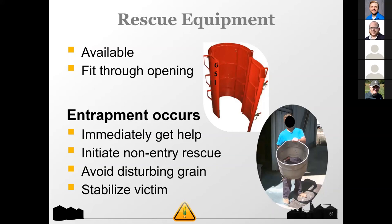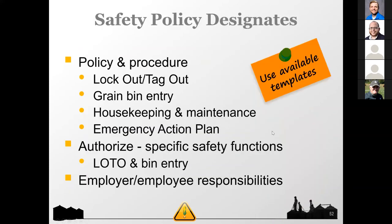The point of the rescue tube is to put it around the victim and then remove the grain mass around them to safely extricate the victim. It will only work in entrapment situations. Many fire and rescue departments these days have been purchasing them. By removing the grain, you stabilize the victim — without the grain tube, it's impossible to remove the grain because more will just flow in and keep the individual locked.